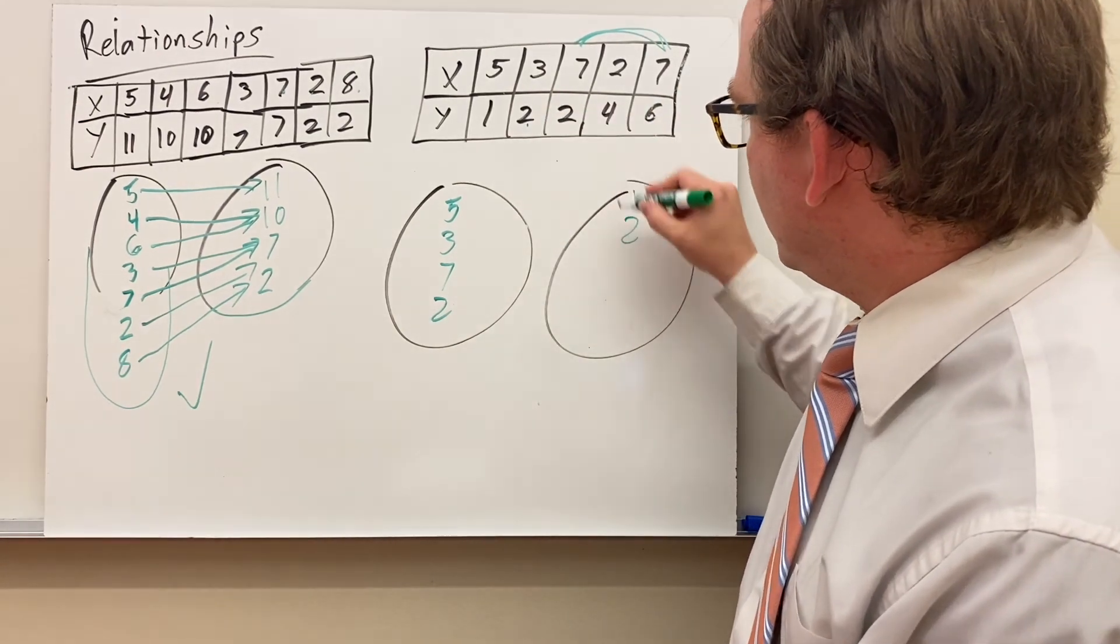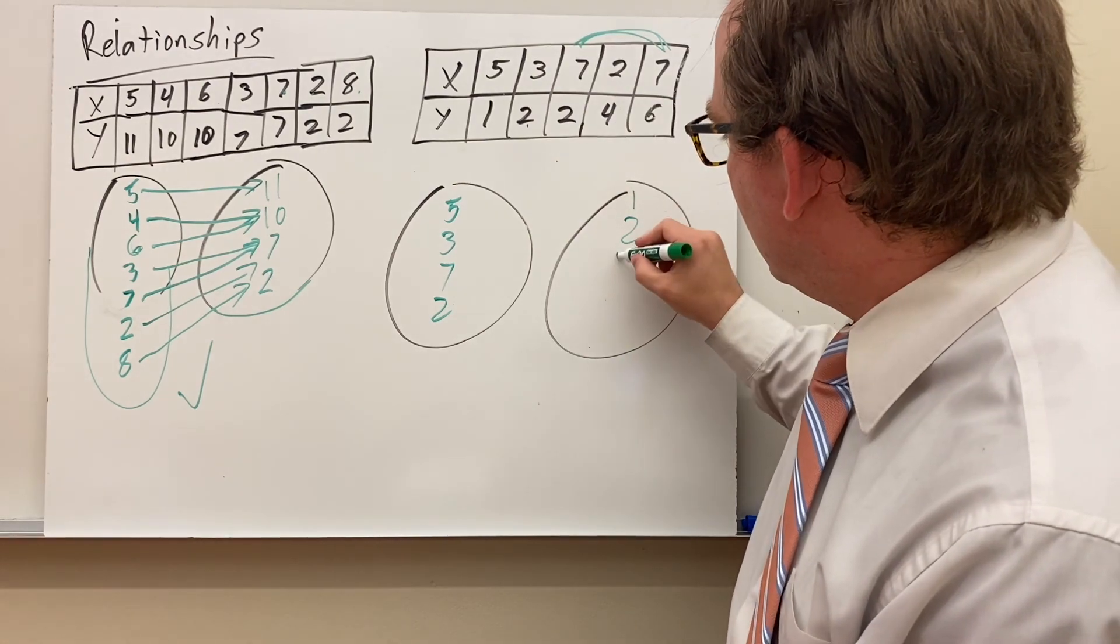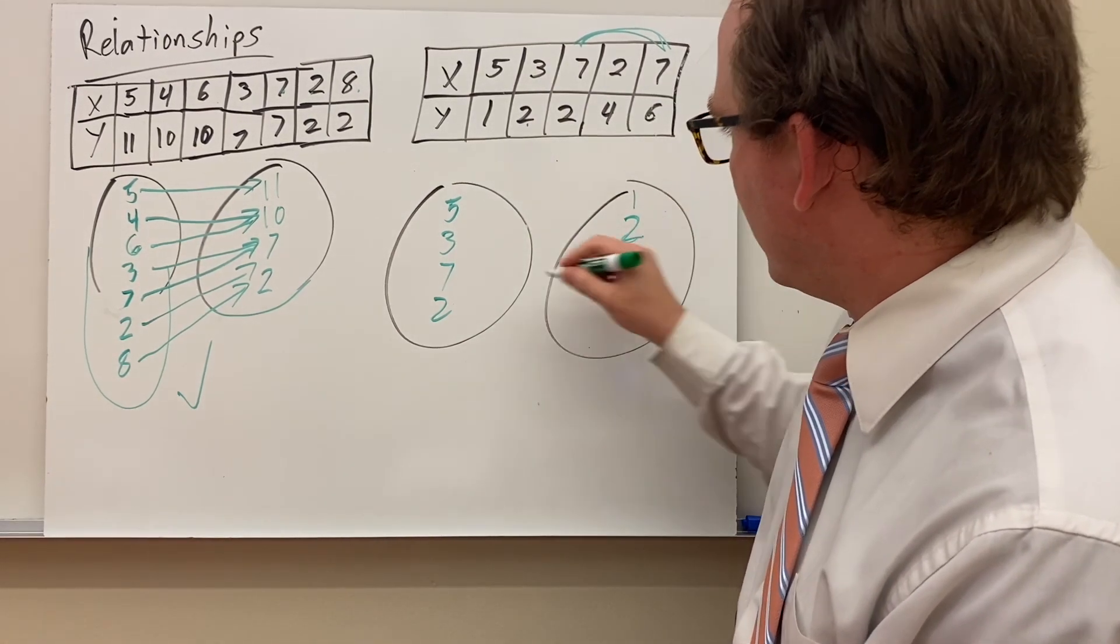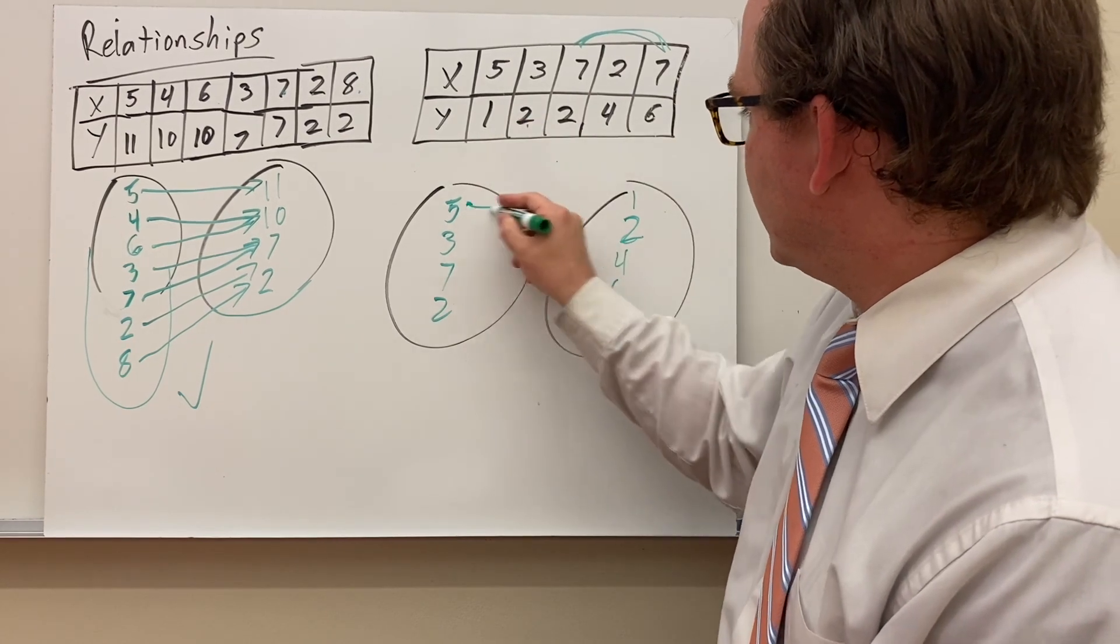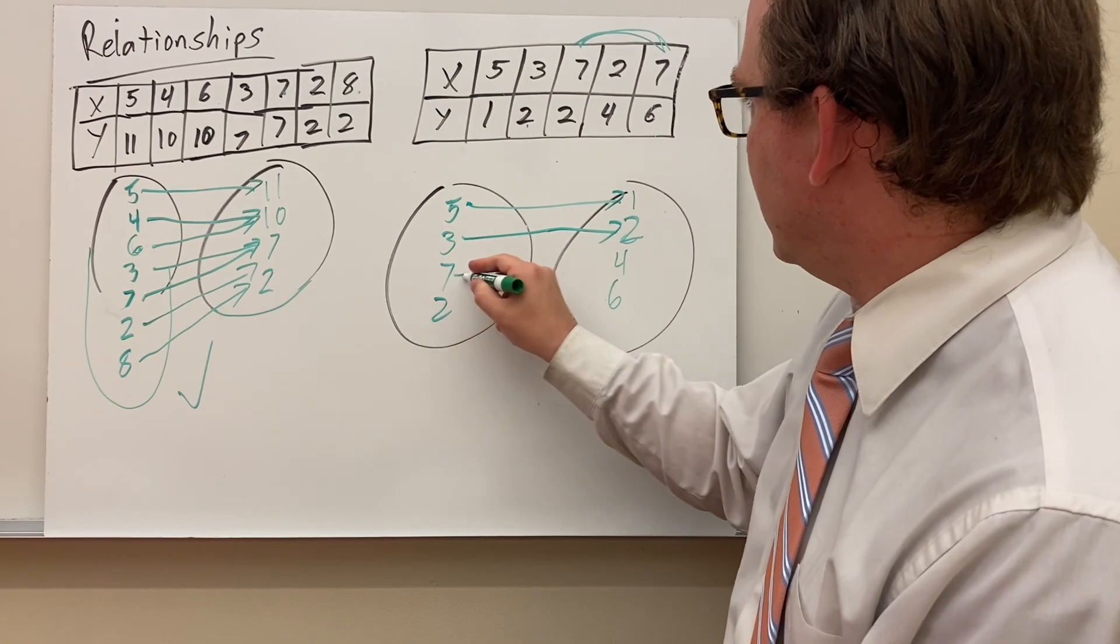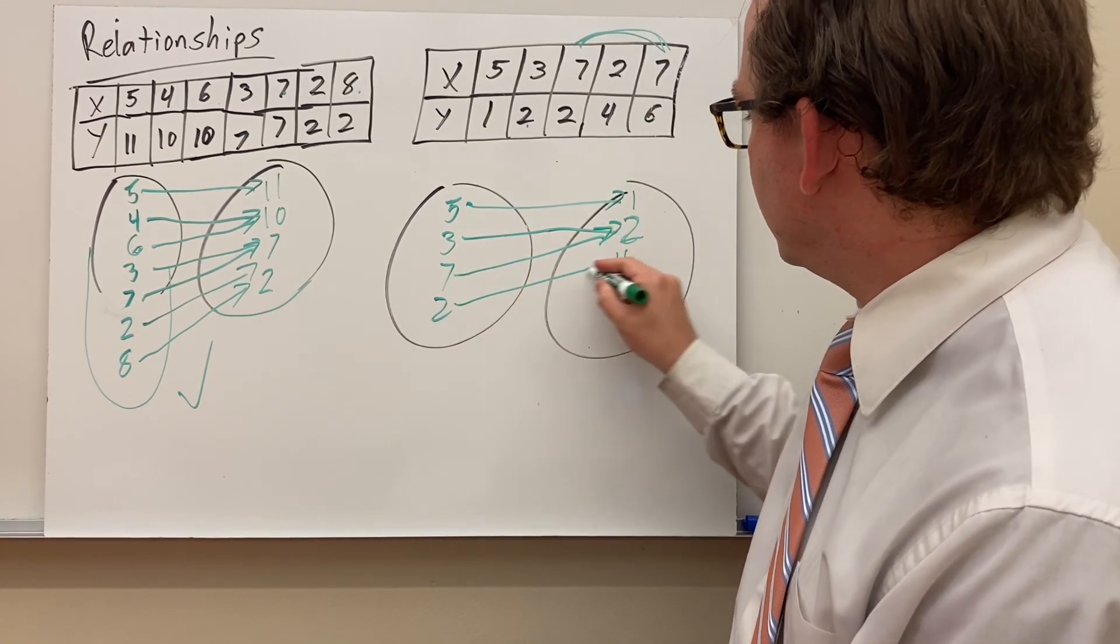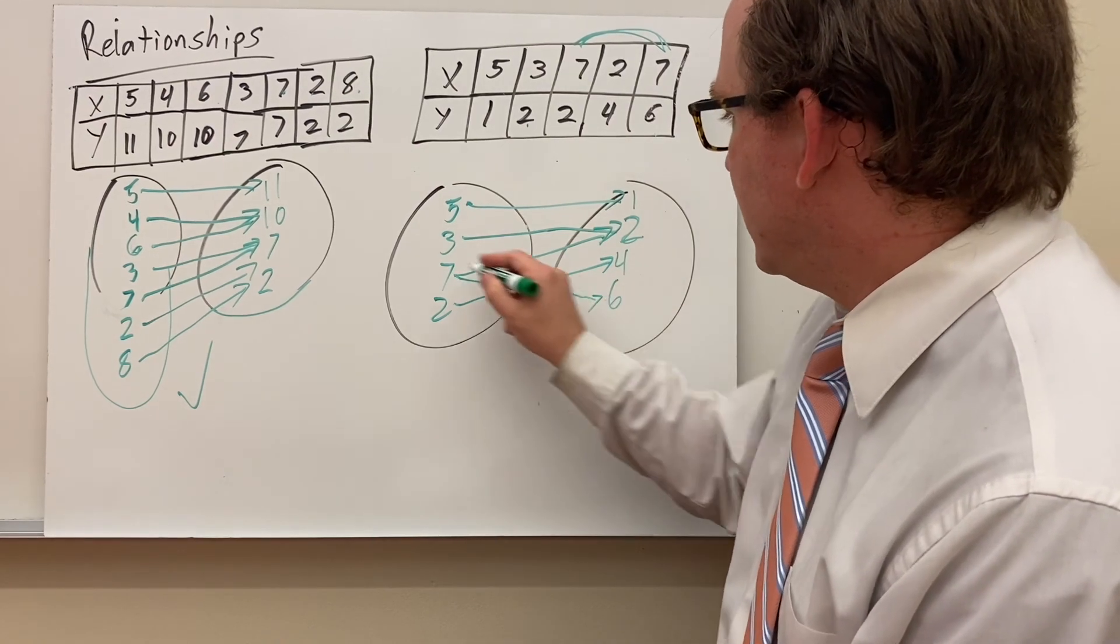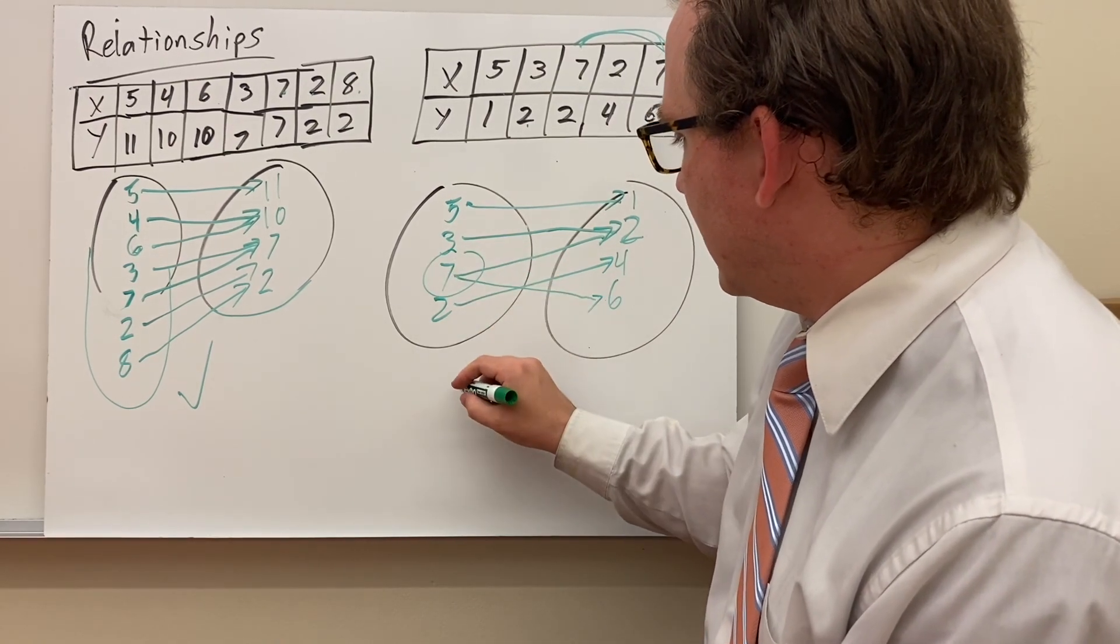5 goes to 1, 3 goes to 2, 7 also goes to 2, 2 goes to 4, and 7, oh 7 again goes to 6. So this right here says this is not a function.